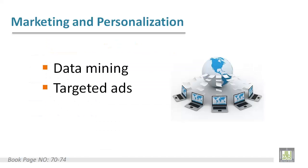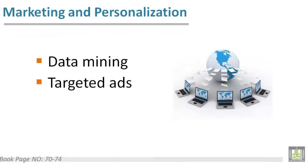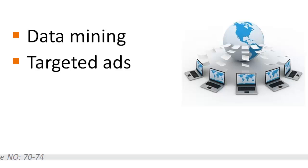We are going to discuss privacy and many issues. Let's start with marketing and personalization in business. Some companies, especially large companies, use data mining and targeted advertisement to improve their marketing and personalization. For example, companies say targeting reduces the number of advertisements overall that people will see, and provides advertisements that people are more likely to want.